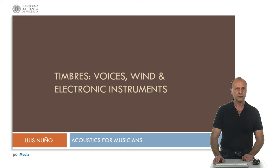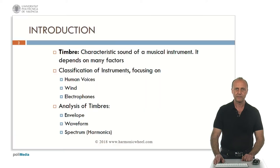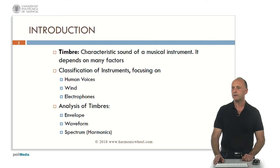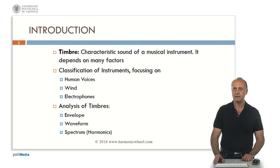In this presentation we will analyze the timbres of human voices and wind and electronic instruments. Timbre is the characteristic sound of a musical instrument. It depends on many factors. From the classification of instruments we will focus on human voices, wind instruments, and electrophones. To analyze the timbres we will consider the envelope, the waveform, and the spectrum — that is, the harmonic series.